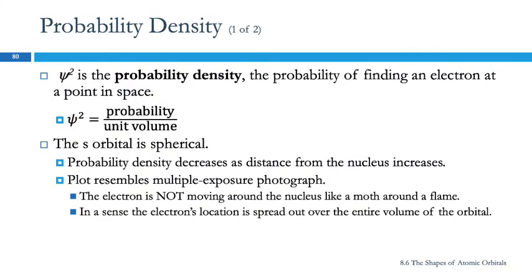So that wave function squared is called the probability density, the probability of finding an electron at a point in space. The s orbital is spherical, and so the probability density then decreases as the distance from the nucleus increases.